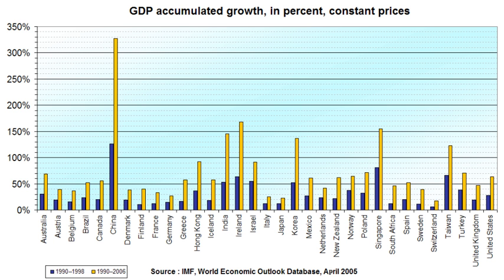Unified growth theory was developed by Oded Galor and his co-authors to address the inability of endogenous growth theory to explain key empirical regularities in the growth processes of individual economies and the world economy as a whole. Unified growth theories are endogenous growth theories that are consistent with the entire process of development, and in particular the transition from the epoch of Malthusian stagnation to the contemporary era of sustained economic growth.